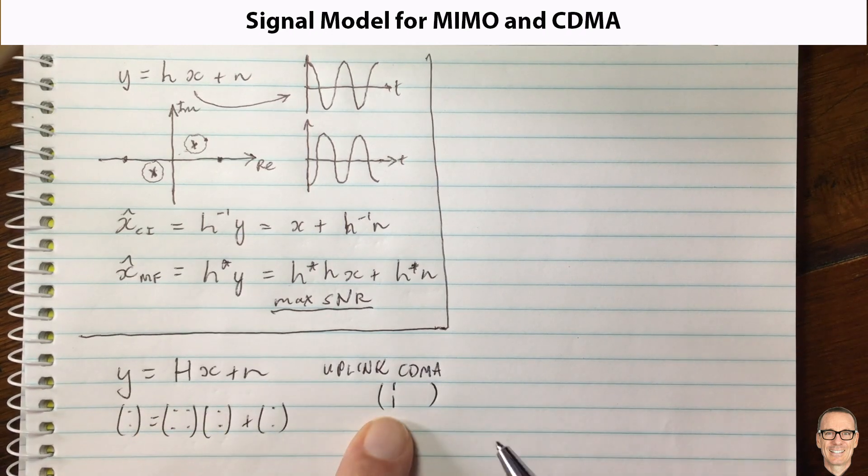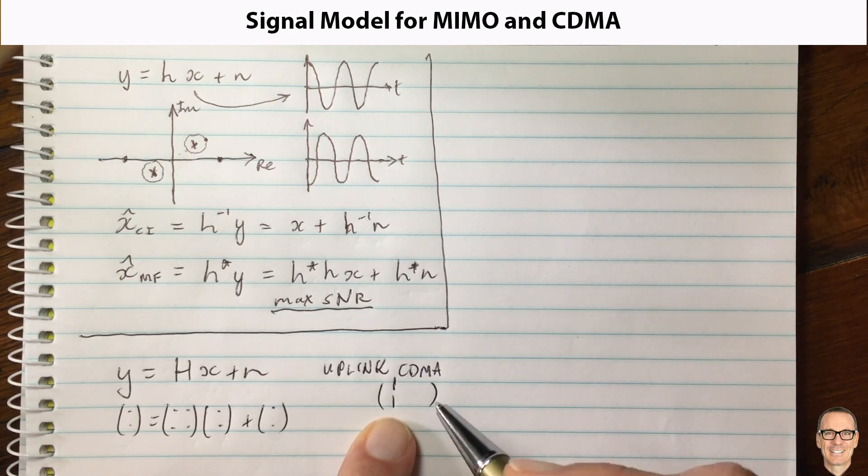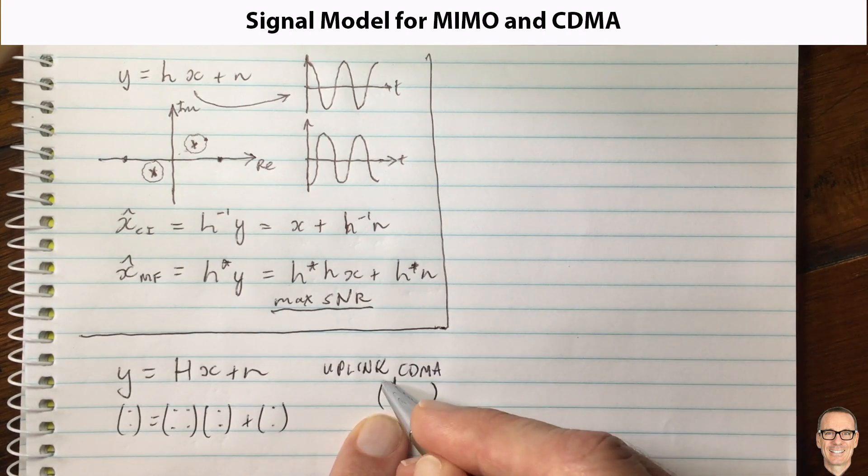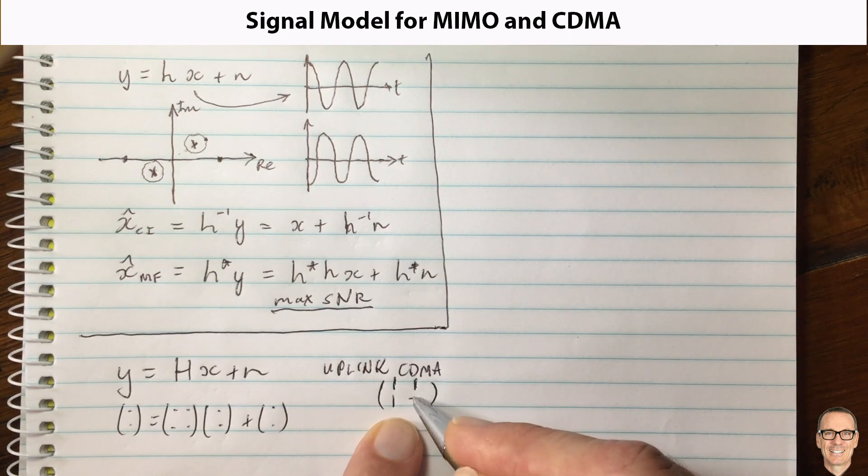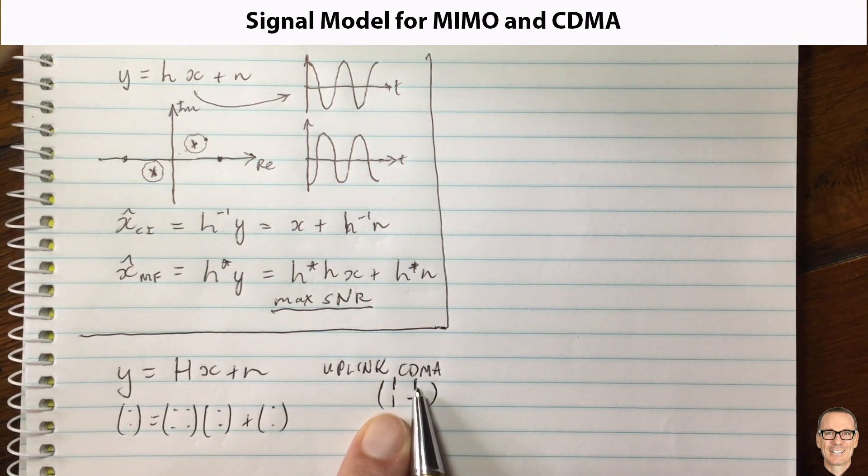And the chips in the sequence are orthogonal to the chips for the other users, or you'd like them to be orthogonal. You try to choose them to be orthogonal. You can't always choose them to be orthogonal, sometimes they're not, and that's what we'll see in just a few minutes. But let's consider the first one is one one, the second sequence for the second user is one and minus one.